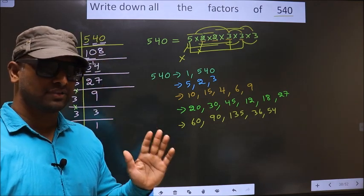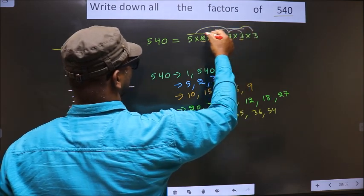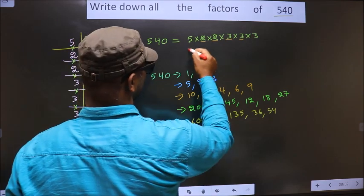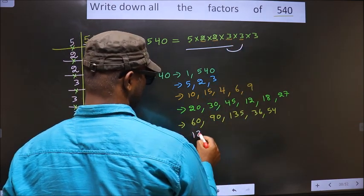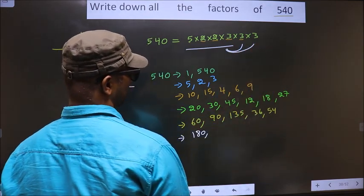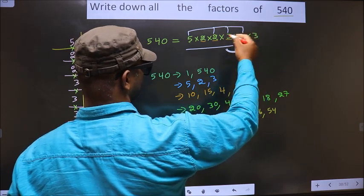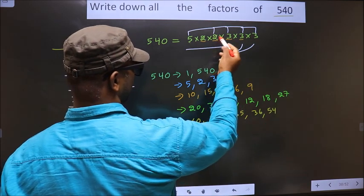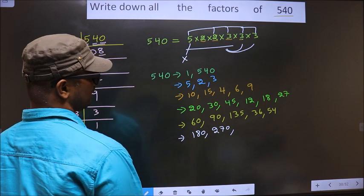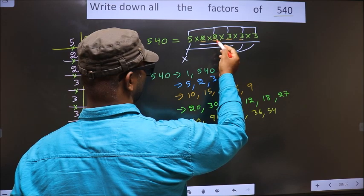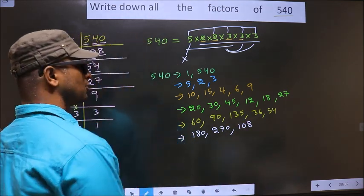Now take combinations of 5 numbers. Fix 5, 2, 2, 3: 5 × 2 = 10; 10 × 2 = 20; 20 × 3 = 60; 60 × 3 = 180. Fix 5, 2, 3, 3: 5 × 2 = 10; 10 × 3 = 30; 30 × 3 = 90; 90 × 3 = 270. Fix 2, 2, 3, 3: 2 × 2 = 4; 4 × 3 = 12; 12 × 3 = 36; 36 × 3 = 108. No other combinations possible.